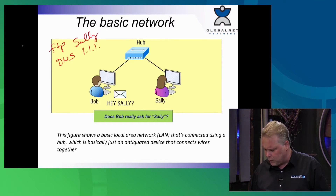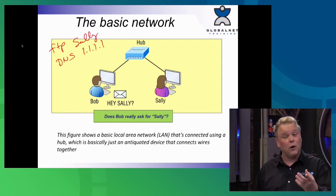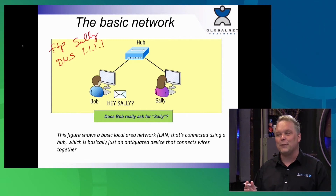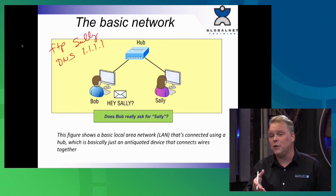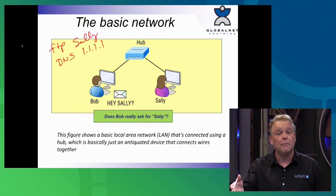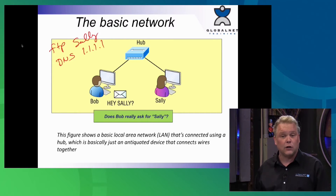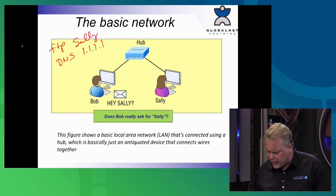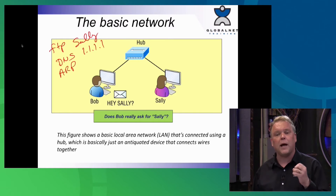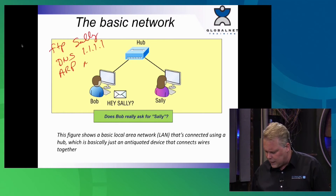Bob has almost everything he needs to communicate to Sally. He still needs to get her MAC address. If we are on a LAN, I don't communicate using IP addresses — I use that IP address to get someone's MAC address, hardware address, burned-in address, whatever you want to call it. He's going to look in his ARP cache, and when he gets it, a host is going to save that — Windows keeps it for about nine minutes, but Cisco routers keep it for four hours. So basically, we're going to broadcast an ARP — Address Resolution Protocol — to get Sally's MAC address.